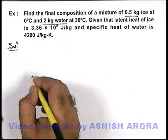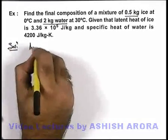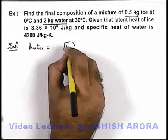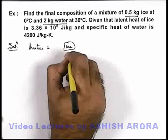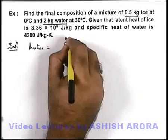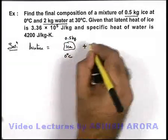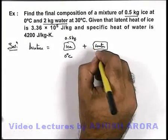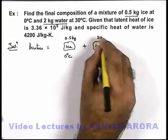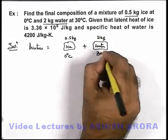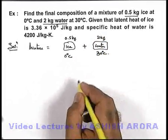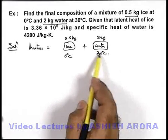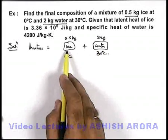Here we can start with the solution. The mixture we are having is ice at 0°C and 0.5 kg, plus water which is 2 kg at 30°C. Now in this situation, we can see this water will release some amount of heat which is going to melt the ice.